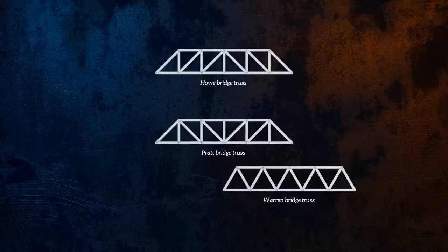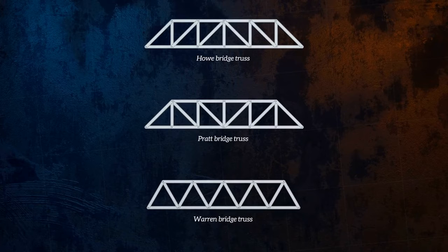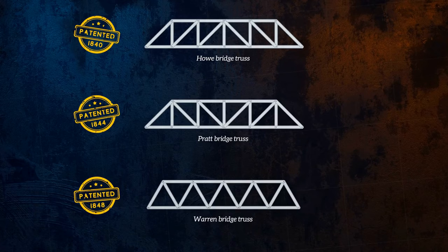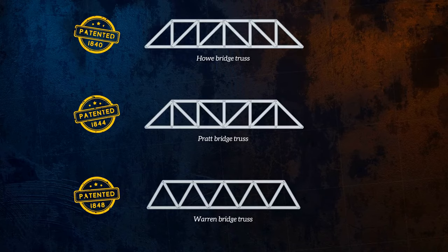Let's explore some of the differences between truss designs. Here we have three different bridge trusses, the Howe, Pratt and Warren trusses. These trusses were all patented in the 1840s, at a time when new bridge designs were being developed to accommodate the expansion of the railroad industry. They were typically constructed from a combination of wood and iron. We can learn a lot about truss design by figuring out which members are in tension and which are in compression.